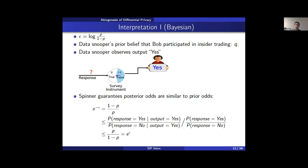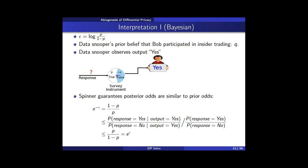If Bob is honest with the randomized response mechanism, the snooper can use the output to compute posterior odds — the updated probability that Bob is an insider trader divided by the updated probability that he is not. Randomized response guarantees that the prior odds increase or decrease by a factor of P over 1 minus P, which means the change is by at most e to the epsilon or e to the minus epsilon.